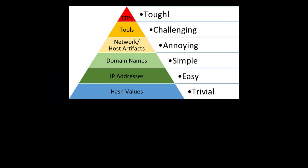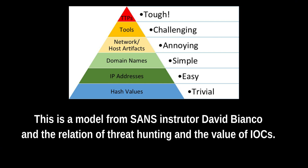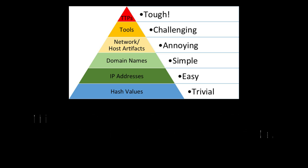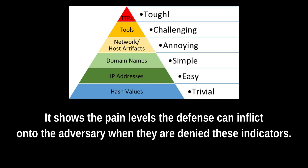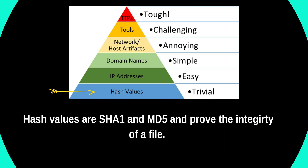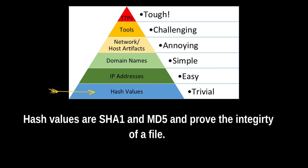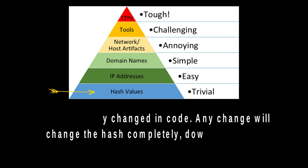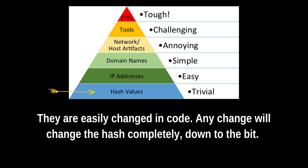Now that we've talked about the maturity models, I wanted to give a brief overview of the pyramid of pain. This is a model from David Bianco, who's a SANS instructor, and it relates to threat hunting and the value of IOCs. It shows the difference between pain levels the defense can inflict on an adversary when they're denied these indicators — think about this as the time and resources the adversary must spend in order to continue toward their goal. On the bottom we have hash values, such as SHA-1 and MD5, which are hashing algorithms that provide integrity of a file. These can be changed extremely easily in the code — any change to the file will change the hash completely, even down to the bit.